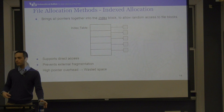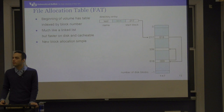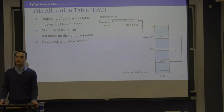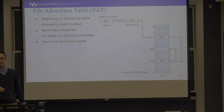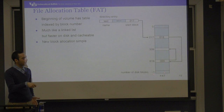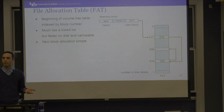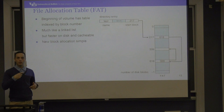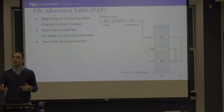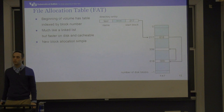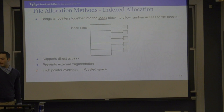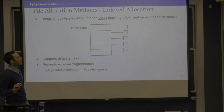Next is index allocation. Index allocation brings all the pointers into a single index block. You have an index table for each file. Within the index table, you point to all the blocks. If a file has 50 blocks, there will be an index table of size 50 telling you: block 0 is stored in physical block X, block 1 is stored in physical block Y, and so on. The first access to a file accesses its index table, then you have the offset within the index table, which points you to the block.